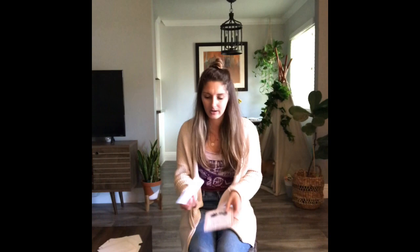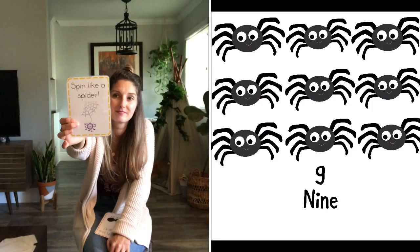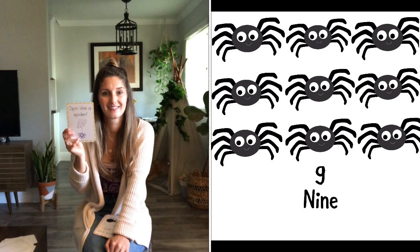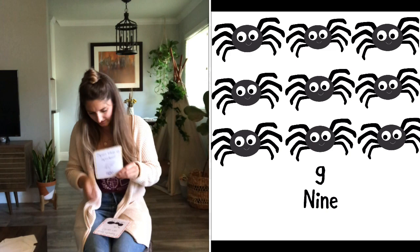This says spin like a spider. How many spiders do you see friends? Can you count them for me? Good. That was a hard one. There are nine spiders. So that means we get to spin nine times. So we're going to stand back up.